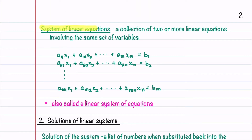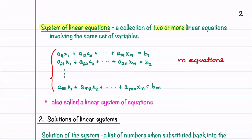A system of linear equations is a collection of two or more linear equations involving the same set of variables. This is an example of a linear system, and in this example we have m equations and n variables or unknowns. A system of linear equations can also be called a linear system of equations.